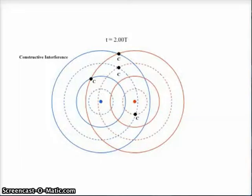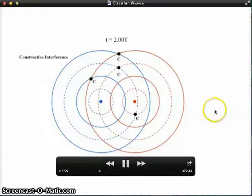And from this, I can see several locations that are constructive interference. For example, over here, we have a red crest meeting a blue crest. So those waves line up and we get constructive interference.